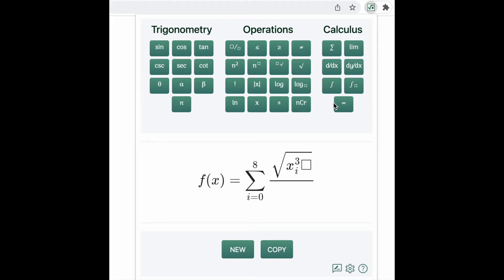Finish by writing plus 9 and then use the forward arrow to get out of the square root, and again, to get out of the denominator. Write 5 in the denominator and use the forward arrow to get out of the fraction.